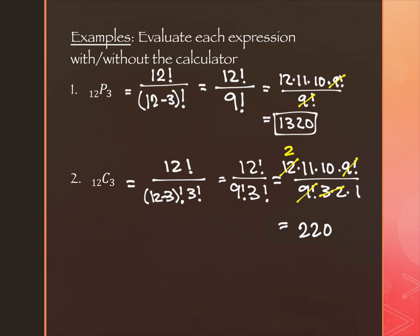So among my 12 friends, there are 1,320 ways, if the order matters, to make a grouping of them. But there's only 220 ways to do it if I don't care what order I pick those three people to go with me to dinner in. Make sense?